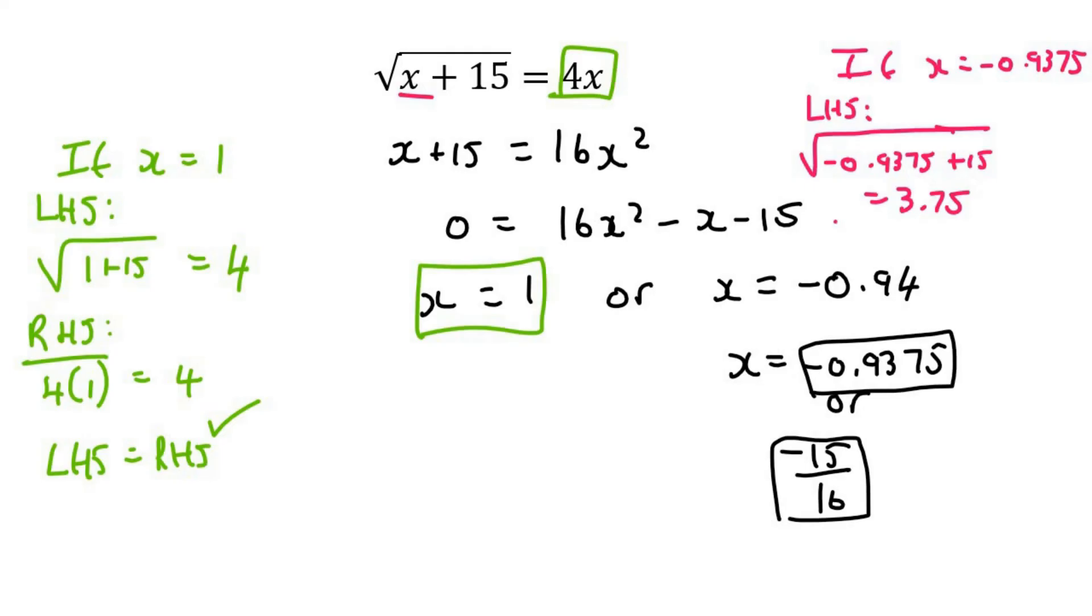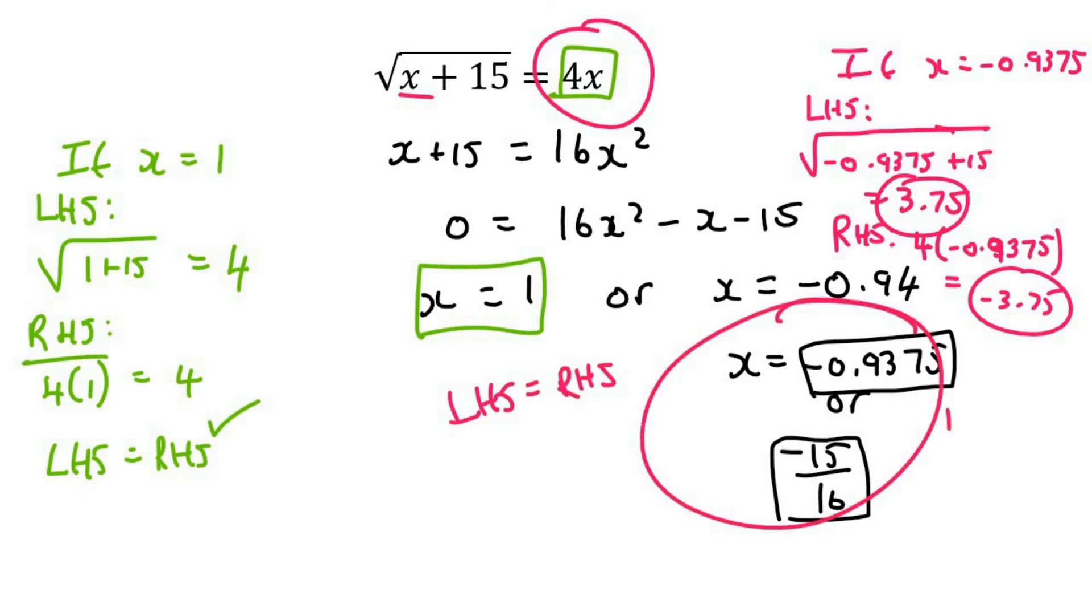Now if I plug that in on the right-hand side, which is this part, it's going to give us 4 multiplied by negative 0.9375, and that gives you negative 3.75. So these two answers are not the same. The left-hand side is not the same as the right-hand side. And so this answer is not valid. No solution for that one.